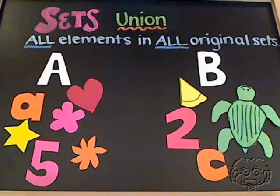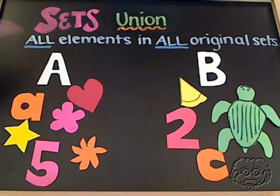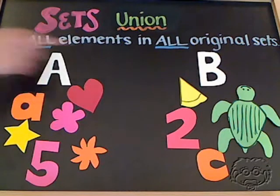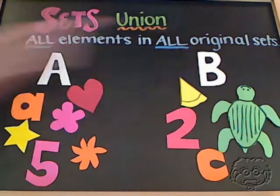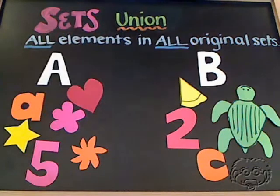In this lesson, we're going to understand the concept of the union of two or more sets. The union of two or more sets is comprised of all elements in all of the original sets that you're taking the union of.